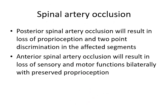Regarding spinal artery occlusion: posterior spinal artery occlusion will result in loss of proprioception and two-point discrimination in the affected segments on one side only. However, if you get occlusion of the anterior spinal artery — because there is only one and it supplies a large area — you will get loss of sensory and motor functions bilaterally in the affected segments with preserved proprioception. That is because the lateral and the anterior columns both will be ischemic. Posterior and anterior spinal artery occlusions will give different clinical pictures because of the different ascending and descending tracts that are affected.